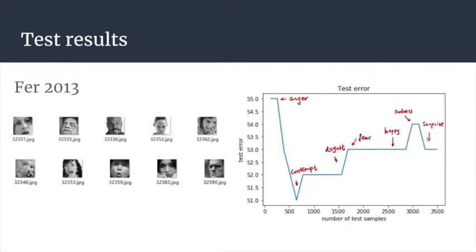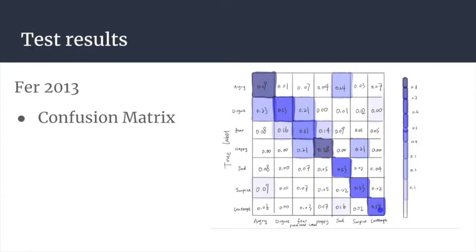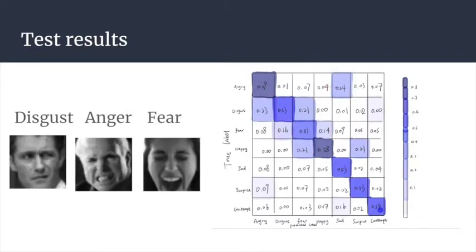The average accuracy for FER 2013 is about 53%. The accuracy for angry, happy, and sad are obviously higher than other classes. We think the reason for this is that we have unbalanced data in the training set, so the model's ability to recognize different emotions varies. To further study the test results, we plot the confusion matrix for FER 2013. We found some emotional classes where the model always makes mistakes: disgust, angry, and fear form one group, and happy and surprise form another. We think this may be because the training images for these classes look too similar.